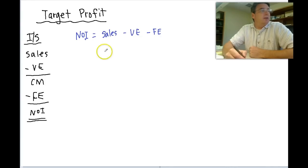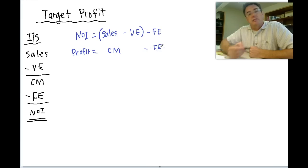Well another word for net operating income is profit as we just said. So we can change that word to profit. How about if I put parentheses around sales minus variable expenses? Is there another word or term we use for that? Well right here, sales minus variable expenses, that's our contribution margin. So profit equals contribution margin minus fixed expenses.